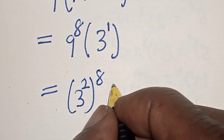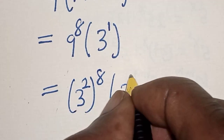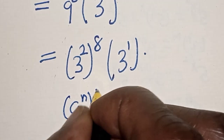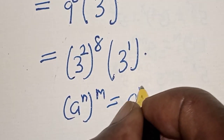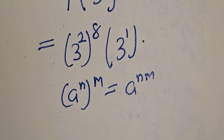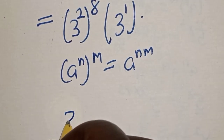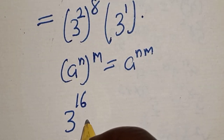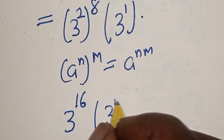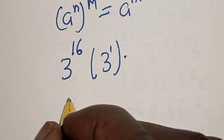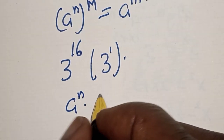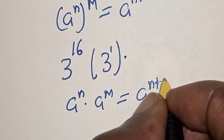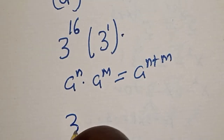So we have 3 squared raised to power 8, bracket 3 raised to power 1. Note this rule: a raised to power n, raised to power m, is equal to a raised to power n times m. Also note this rule: a raised to power n multiplied by a raised to power m is equal to a raised to power n plus m. Applying these, we get 3 raised to power 16 plus 1.